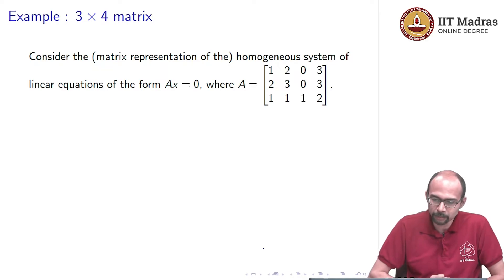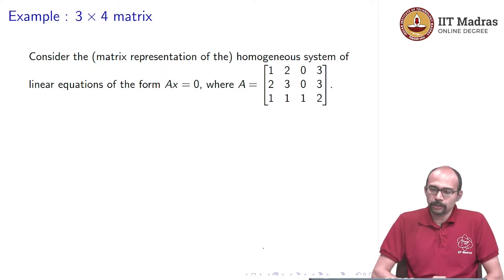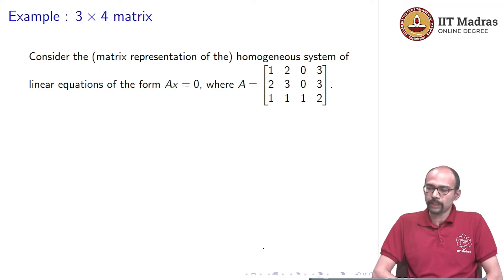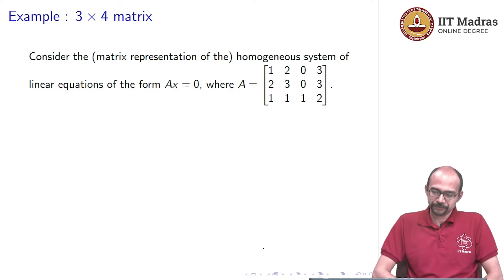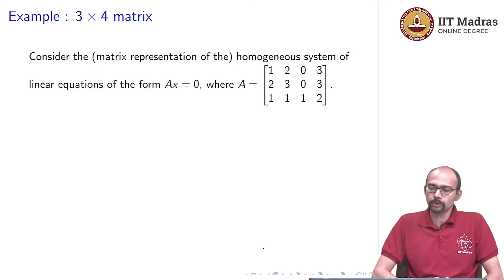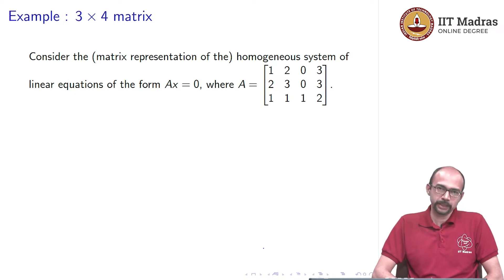Let us do a 3 by 4 example. The matrix is 1 2 0 3, 2 3 0 3, and 1 1 1 2. In this example, what we want to do is find the nullity and a basis for the null space.